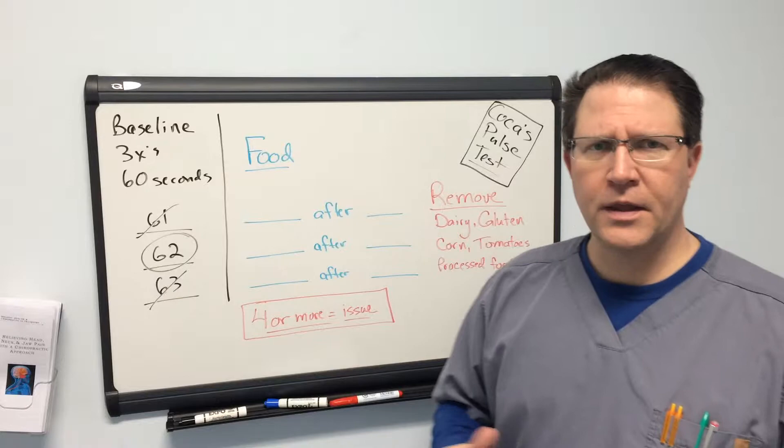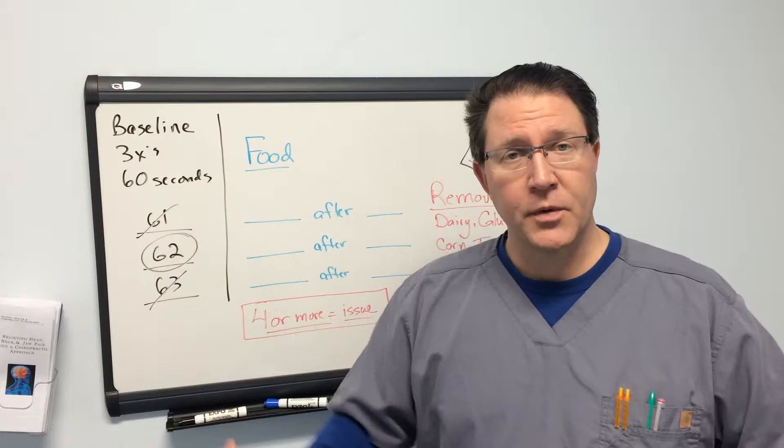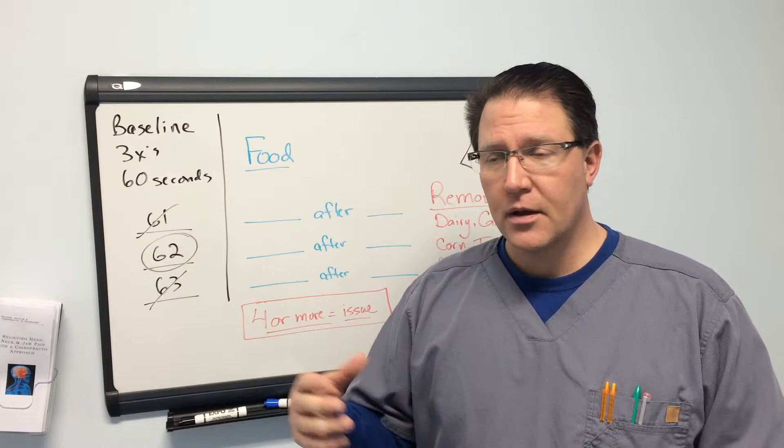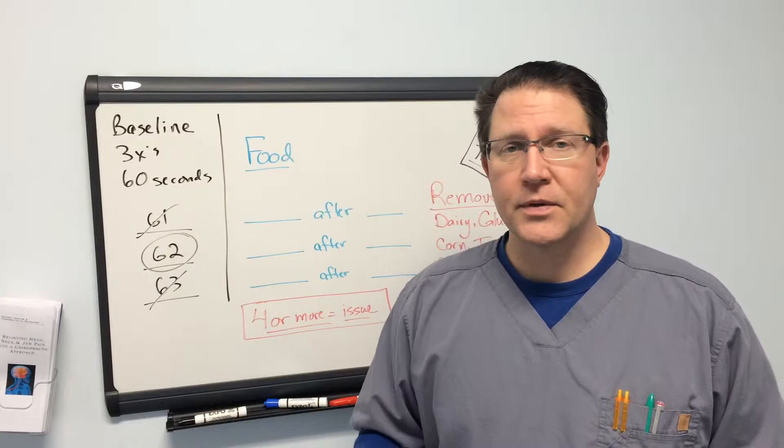Now what you can do is if you suspect or think that there might be some foods that your body is not reacting well to, you can gather up those foods at the kitchen table, get some bread, get some dairy, get some milk, some cheese, different proteins, things that you might think that could be an issue, and get small samples of those ready on a little plate.